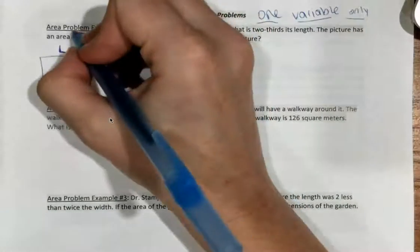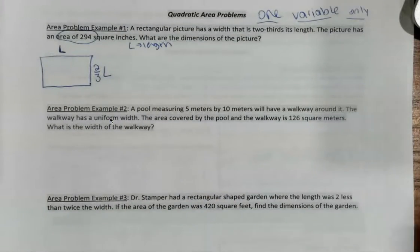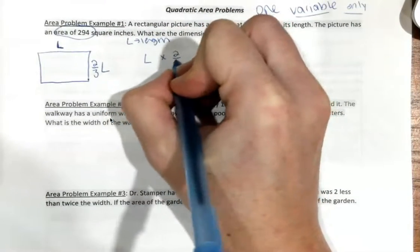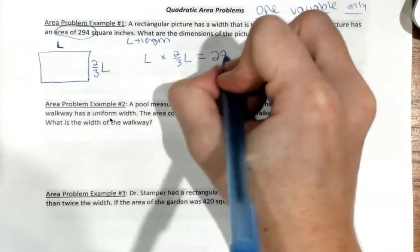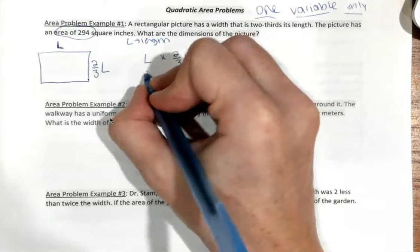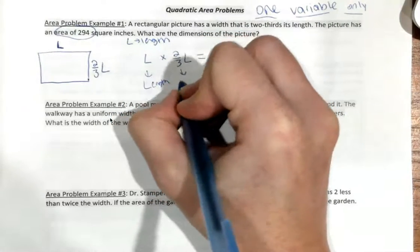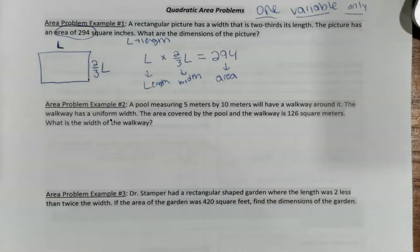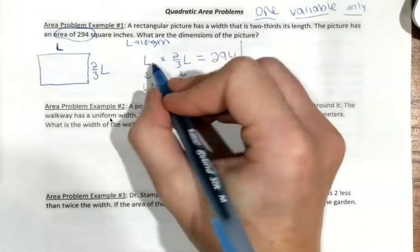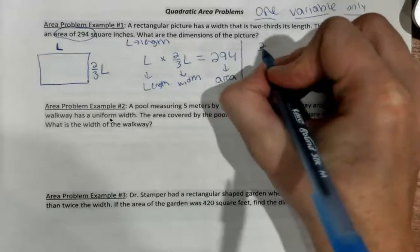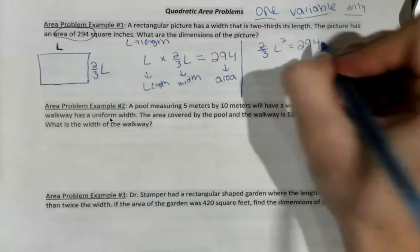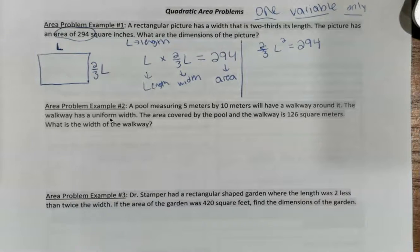Looking at this, it tells us that the width is two-thirds its length. So, that's just going to be multiplication. I'm going to take two-thirds, and I'm going to multiply it times L. So, two-thirds L is my width. Now, it gives me the area of 294. To find area, we do multiplication. We do length times width. So, all I'm going to do here is L times two-thirds L is equal to 294, the area.